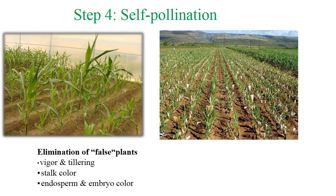Step 4 is self-pollination. The doubled plants planted in the field are self-pollinated. Self-pollination is successful only when enormous pollen is produced by the plant. Elimination of false plants, like segregants, will be done. Vigor and tillering should be checked. Stock color, endosperm and embryo color are major factors here.